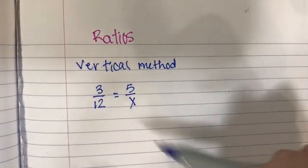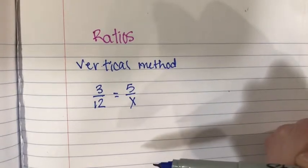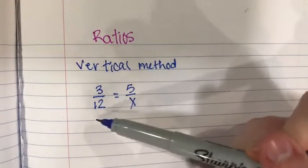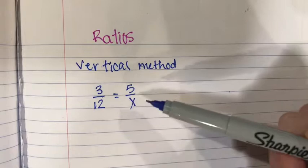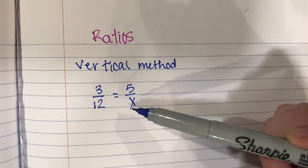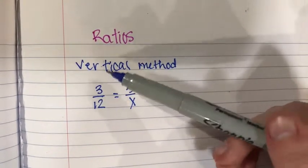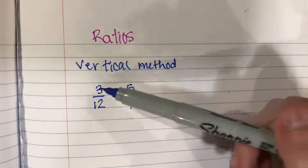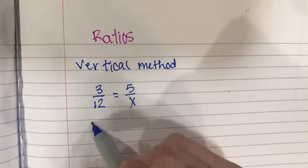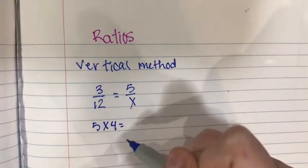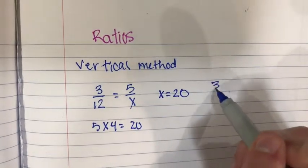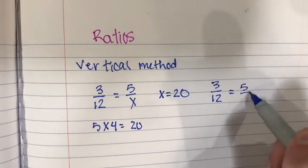Since this is the vertical method, we are going to be looking at the numbers vertically. We are looking at it as how many 3's can go into 12, which is 4. So we know that 4 is the number that we need to multiply 5 by to get x. I know this because if 3 times 4 equals 12 and these are equivalent, then 5 times 4 equals x. So 5 times 4 equals 20, meaning x equals 20. So the ratio is 3 over 12 equals 5 over 20.